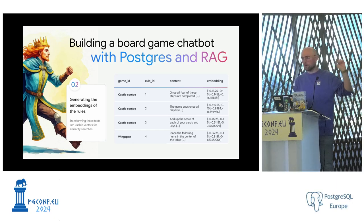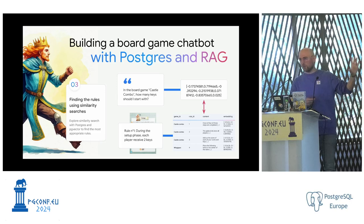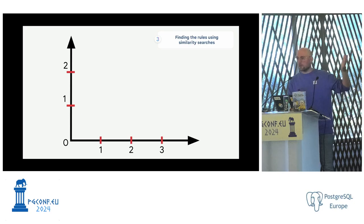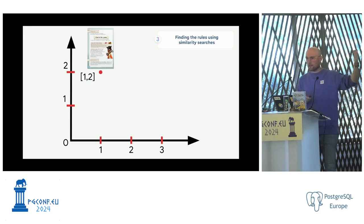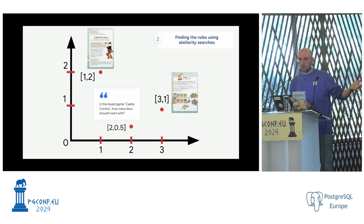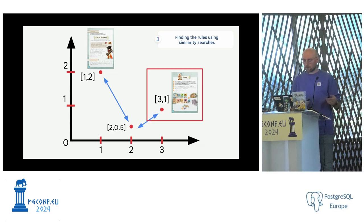Step three: similarity search. We take the user's input, generate an embedding of the question, and compare it to all embeddings of the rules. What does comparing vectors actually mean? If this page has a vector of [1, 2] and another page has a vector of [3, 1], and my question has a vector of [2, 0.5], as a human you can see which two points are closer — that's exactly what similarity search and distance calculation with vectors does.